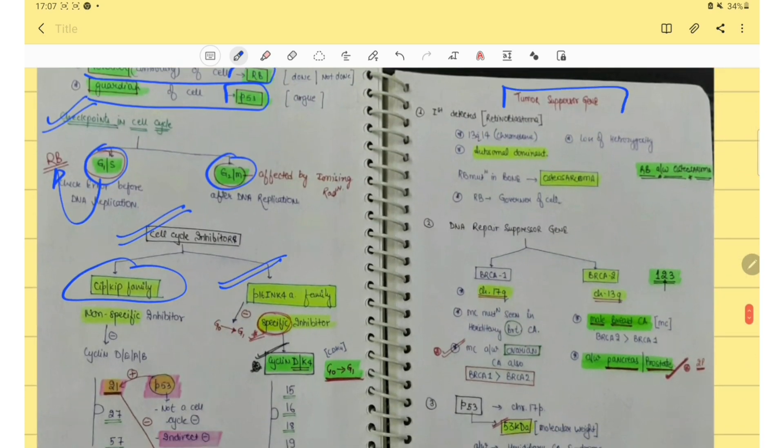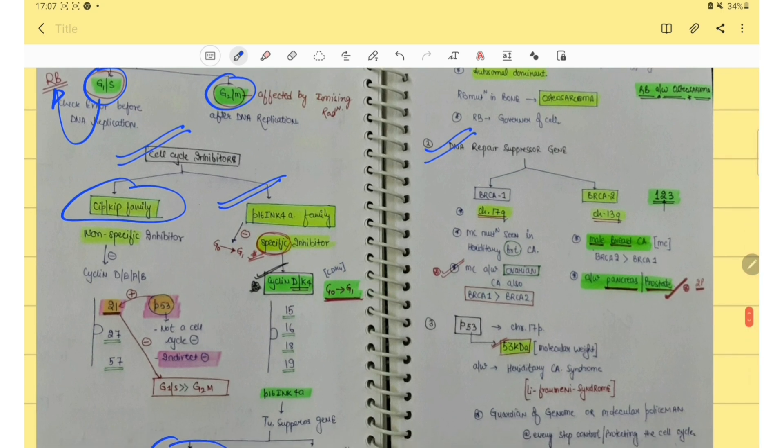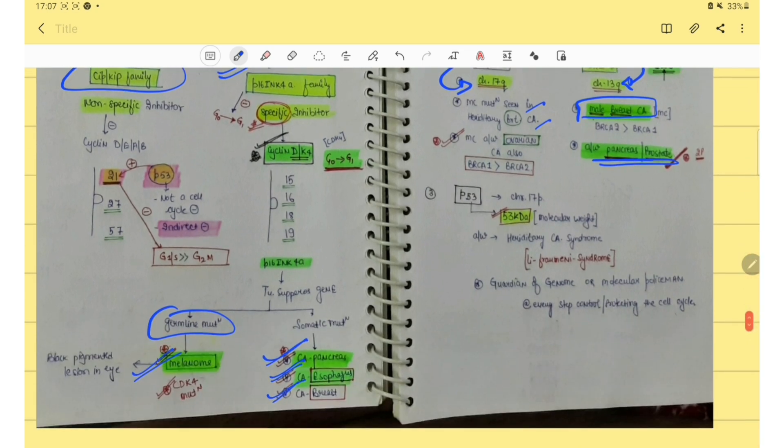Then tumor suppressor gene. Most important is RB gene. Then DNA repair suppressor gene. In this we have BRCA1 and BRCA2. BRCA1 is on chromosome number 17 and BRCA2 in chromosome number 13. BRCA1 mutation occurs in breast and ovarian carcinoma and BRCA2 mutation occurs in male CA breast and also associated with pancreas and prostate cancer.